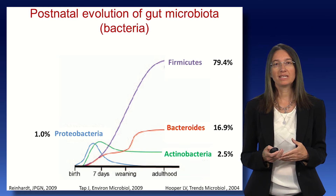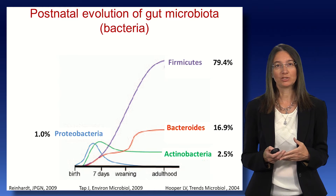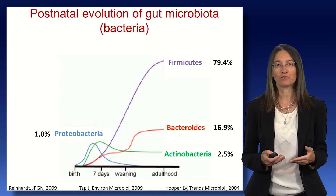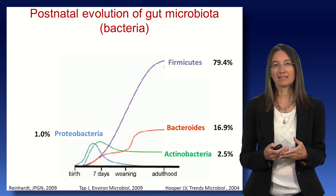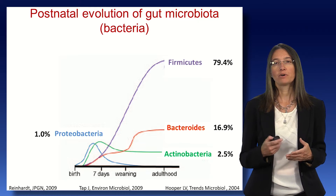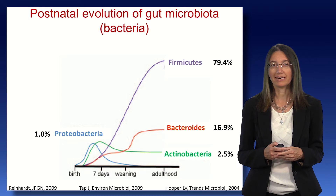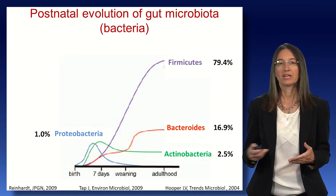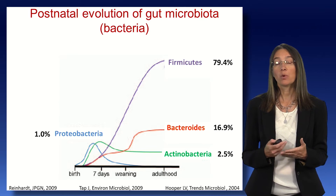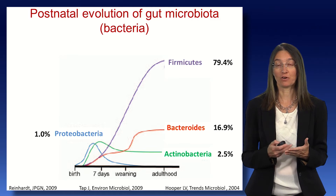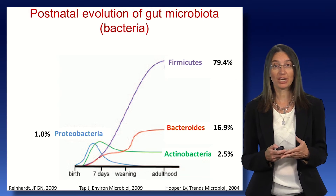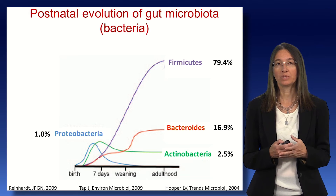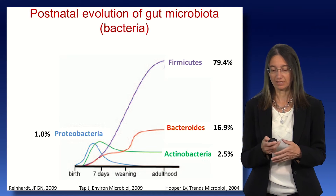This diverse community is acquired gradually during postnatal life and particularly during early stages of life. As you can see from this slide, the four main phyla are represented by four different colours as a function of age, and it is really during early life that the major shifts occur and the microbiome is reshaped to acquire a composition that will remain stable throughout adulthood.